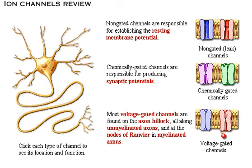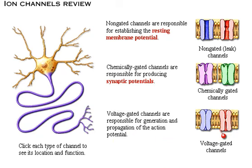Most voltage-gated channels are found on the axon hillock, all along unmyelinated axons, and at the nodes of Ranvier in myelinated axons. Voltage-gated channels are responsible for generation and propagation of the action potential. This topic was studied in the module Nervous System Action Potential.